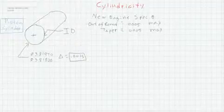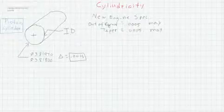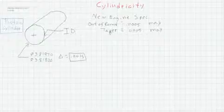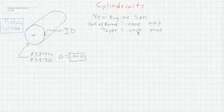Now, the new engine specifications are that the maximum out of round is half a thousandths, and the maximum amount of taper would be half a thousandths as well.